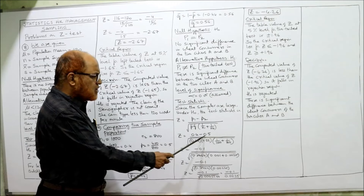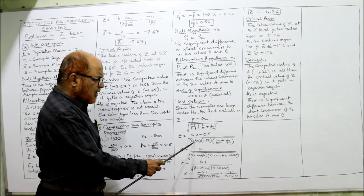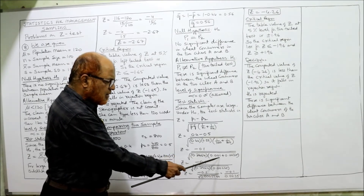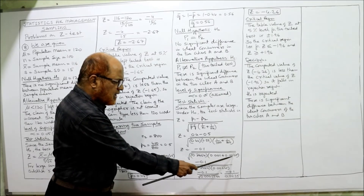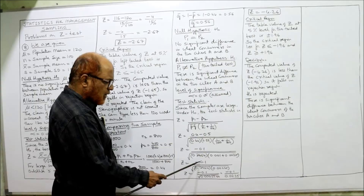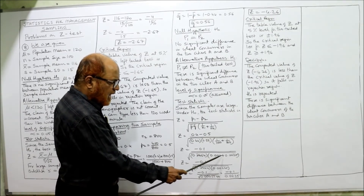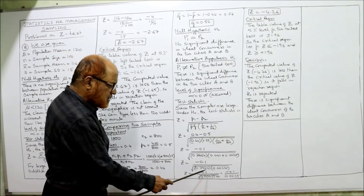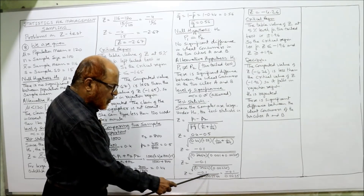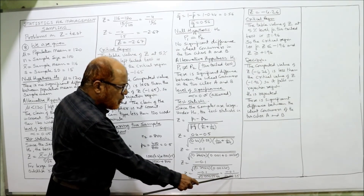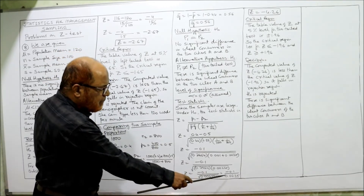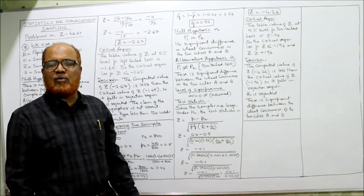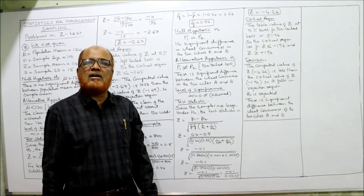Numerator: 0.4 minus 0.5 is minus 0.1. Denominator: 0.44 times 0.56 is 0.2464. Then 1/1000 is 0.001 and 1/800 is 0.00125. Adding these gives 0.00225. Multiplying 0.2464 by 0.00225 gives 0.000554. Taking the square root gives 0.0235. So Z equals minus 0.1 divided by 0.0235, which gives minus 0.426. Minus 0.426 is the computed value of Z.